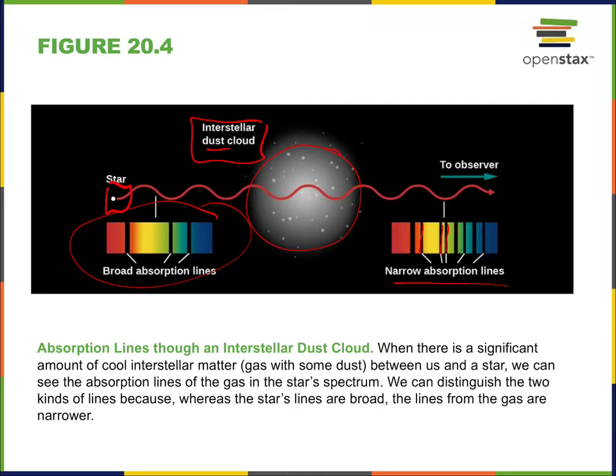A good question is: how do astronomers know those absorptions are coming from a dust cloud and not just from the star itself? It actually has to do with the narrow lines — the dust cloud isn't spinning quickly like the star is, so the star has broad absorption lines and the cloud has narrow absorption lines. Those widths, related to the Doppler effect, really clarify which absorption lines come from the star and which come from the gas cloud.